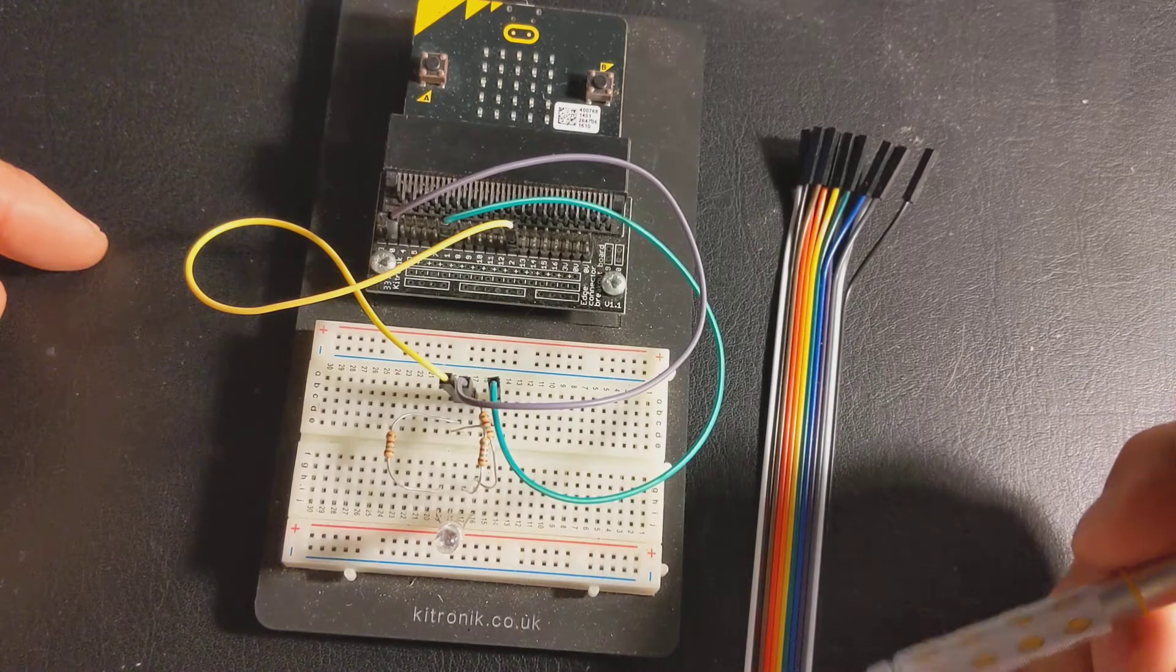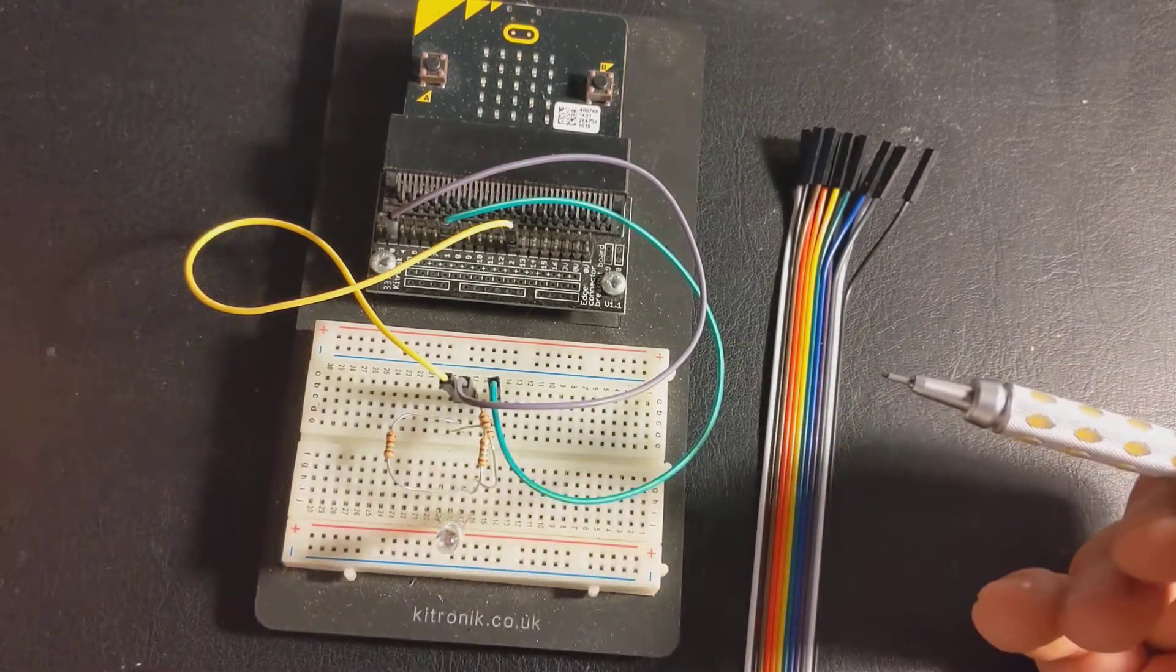So this row of five is not connected to the row of five that's opposite it. So I know that takes a little bit of getting used to, but you can now use that idea to build circuits.